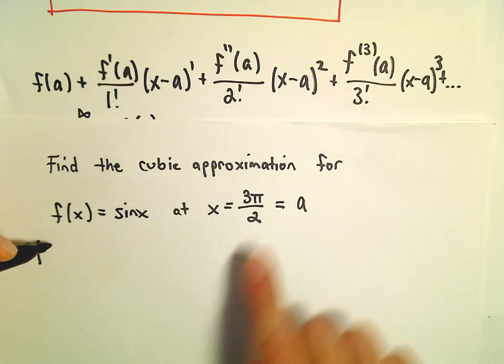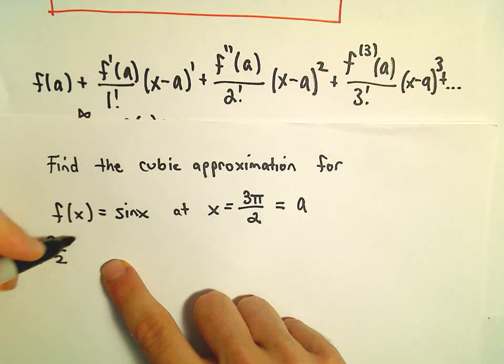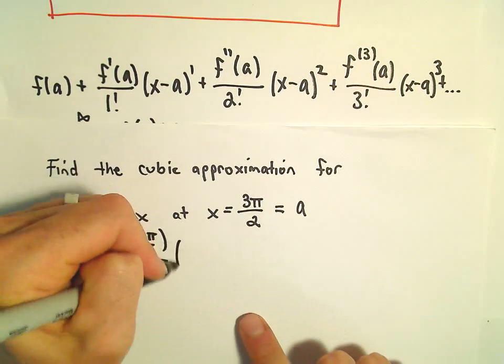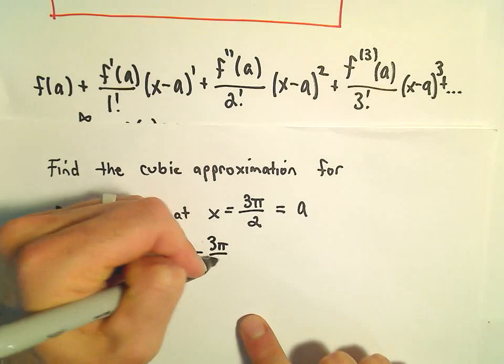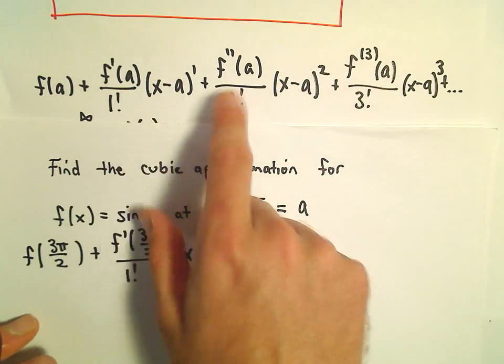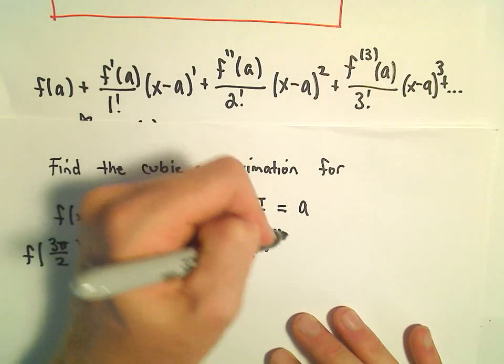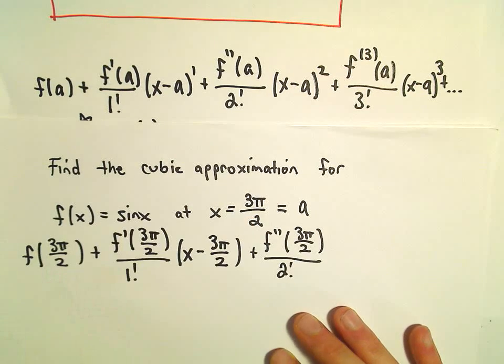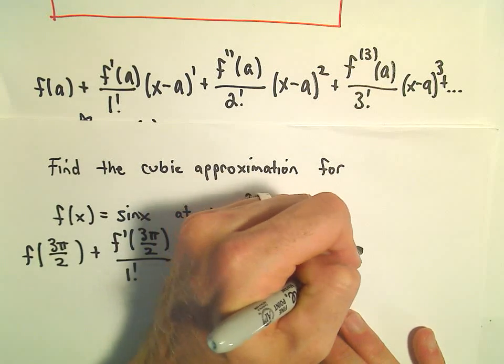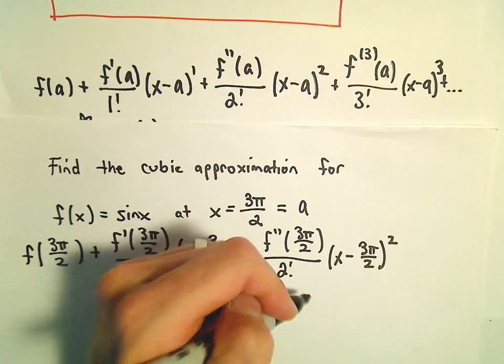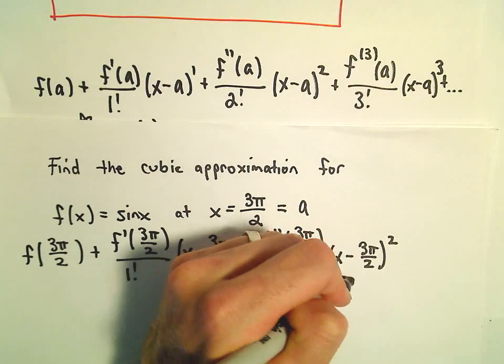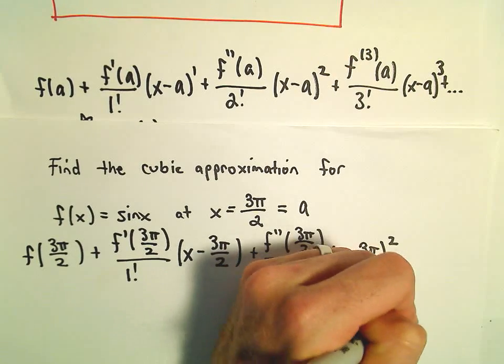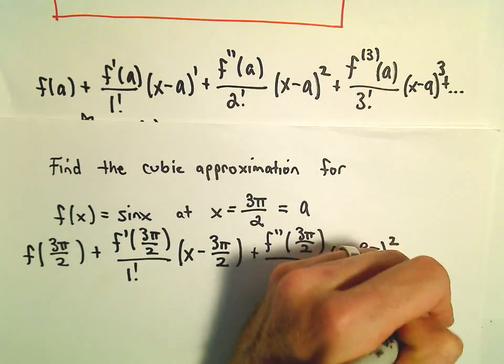We're going to have to compute the value for f(3π/2) plus f'(3π/2) divided by 1 factorial times x minus 3π/2, then f''(3π/2) divided by 2 factorial times x minus 3π/2 squared. And one more: we'll have the third derivative evaluated at 3π/2 divided by 3 factorial times x minus 3π/2 cubed.